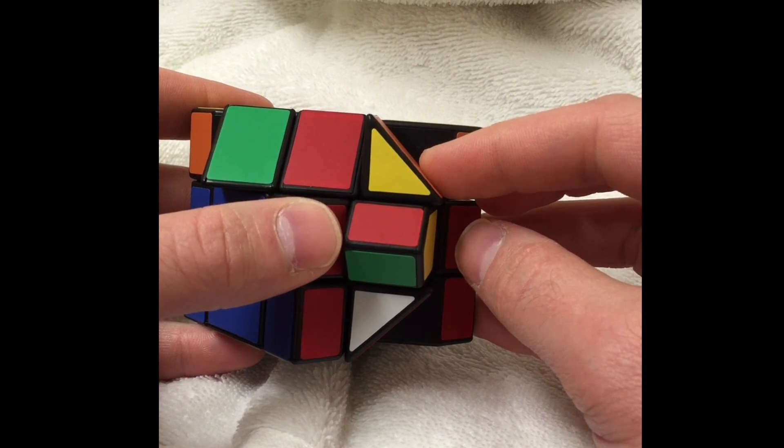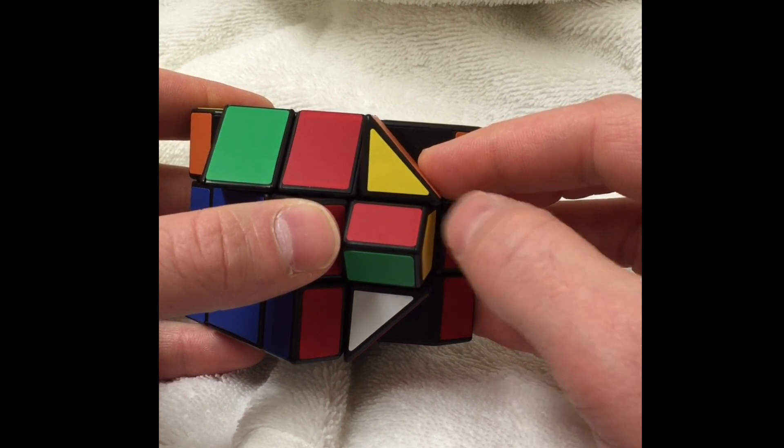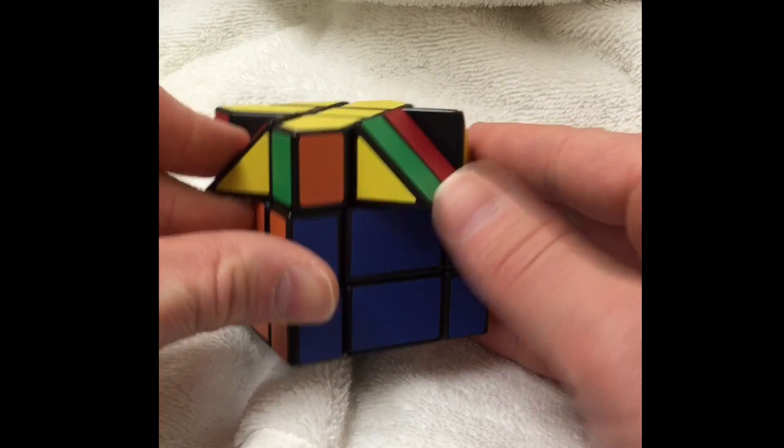So again, we went up, left, down, right, up, left, down, left. Then we turn the whole cube over one like that,